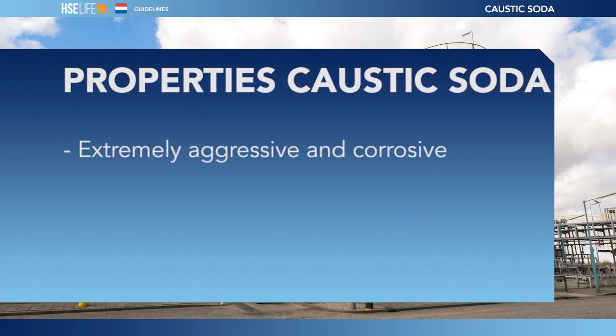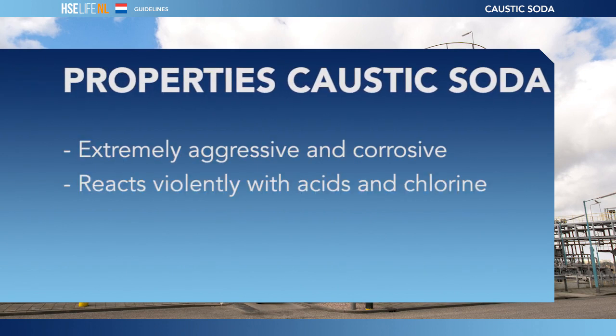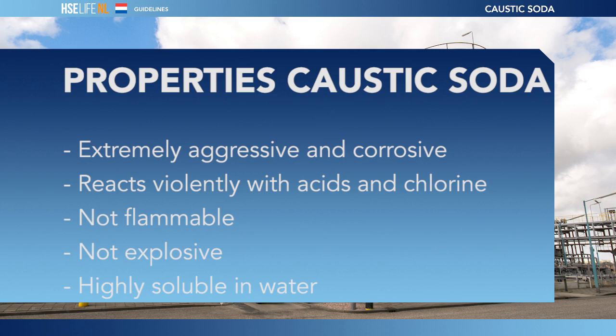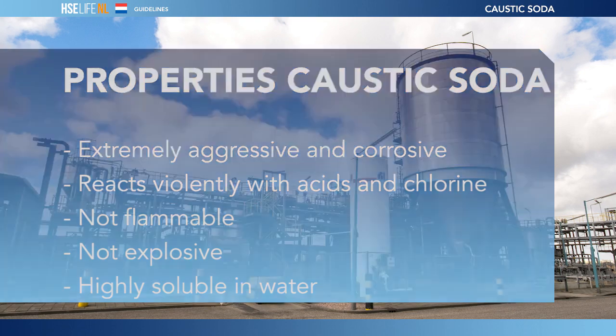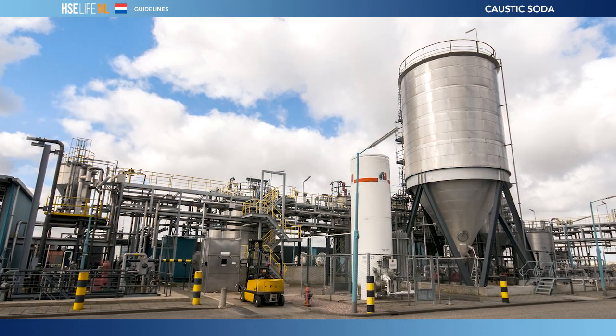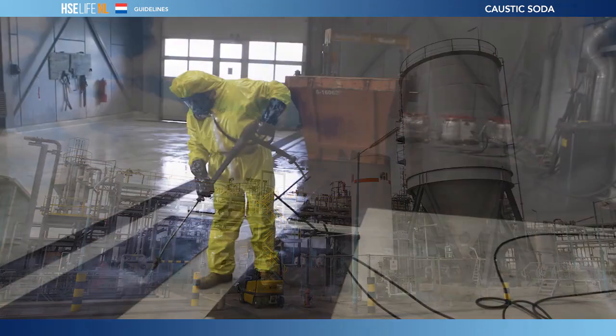Caustic soda is extremely aggressive and corrosive, and it reacts violently with acids and chlorine. It is not flammable or explosive. This substance is highly soluble in water, and when dissolved in water it generates large amounts of heat. There is a risk of corrosive mists forming.